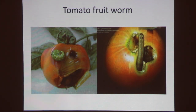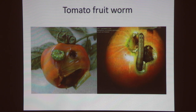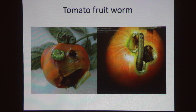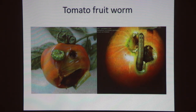This is the tomato fruit worm — it's a caterpillar. As you can see on the slide, it makes holes into the fruit, tunnels in the fruit, and the fruit will rot away and you cannot eat it. If you see caterpillars, just collect them and squeeze them or drown them in water, and try to keep your crop free of these caterpillars. Because once they build up in large numbers, you will lose your crop.